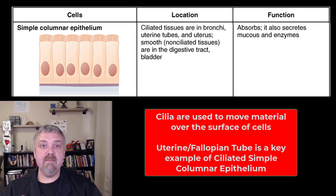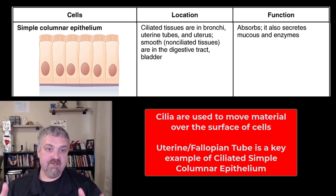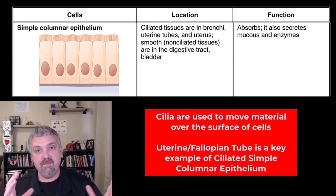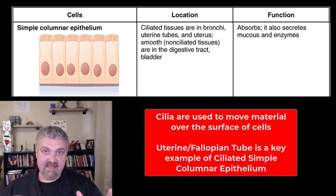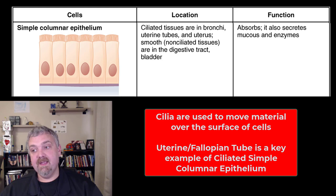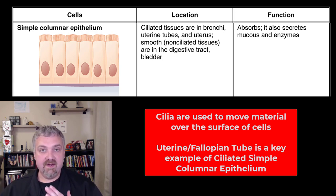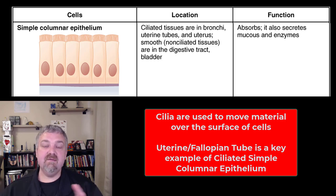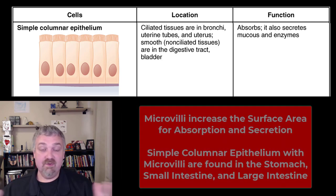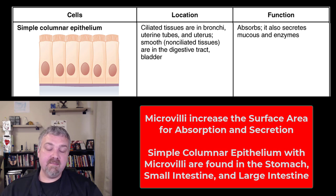Now, some simple columnar epithelium are going to have cilia. Cilia beat kind of like oars on a boat, so if you're going to see a ciliated simple columnar epithelium, it's going to be moving material. The key example there would be the fallopian tubes — parts of the female reproductive tract, especially the fallopian or uterine tubes — which have these ciliated cells that carry material. So remember, cilia: think the movement of material over a cell. The cells lining the stomach, small and large intestine are not going to have cilia.